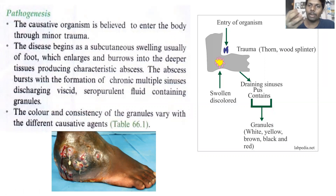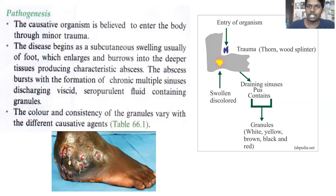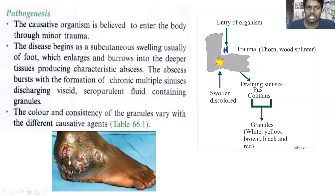The abscess will form — abscess means a wound with pus. From this pus, it will start forming multiple nodules. After gaining entry into the skin, it will start having multiple nodules and will start growing within the foot, generating multiple nodules with multiple sinuses. From these multiple sinuses, purulent fluid will start discharging. This is how the pathogenesis of Mycetoma occurs.